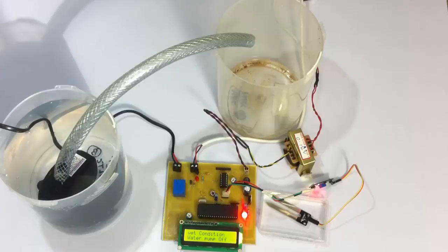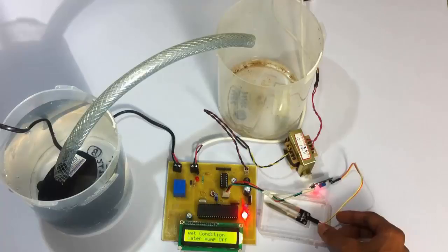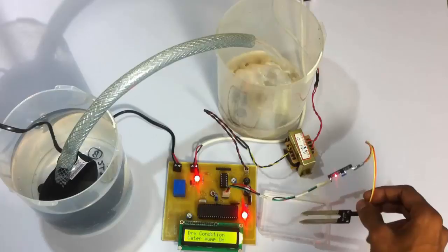Let's remove the sensor out of the water and see what happens. As you can see, as the moisture content was low, it has started irrigation. The process has started and the motor has started.